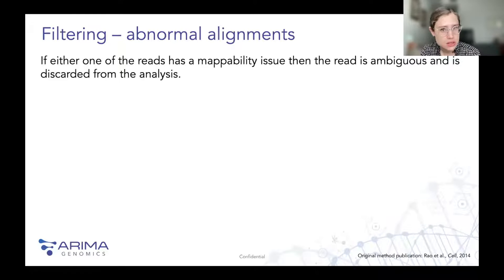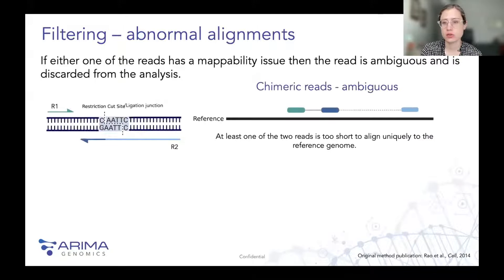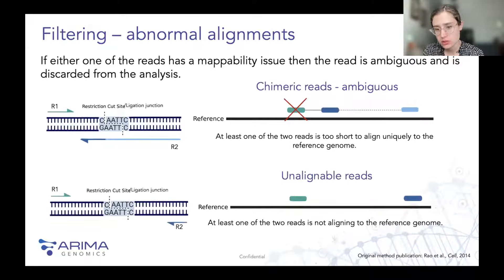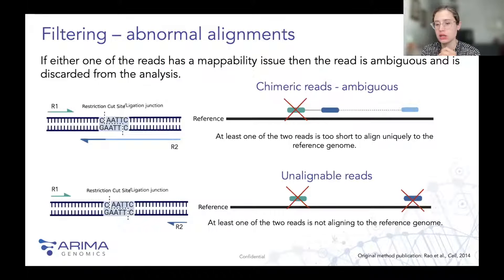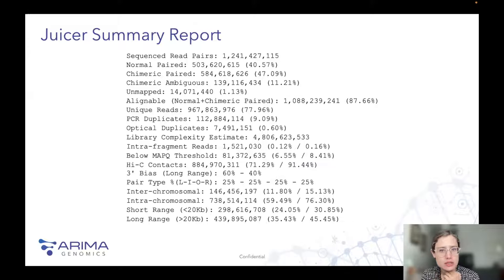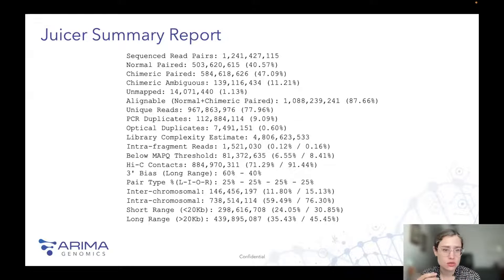Abnormal alignments: if you have a mappability issue, you need to remove that read. For example, with chimeric reads where one end is too short to align properly, that read pair must be discarded. Similarly, if either of the two ends doesn't align uniquely on the genome, we need to remove them whether the read is chimeric or not. After filtering, Juicer — as well as pipelines like HiCup — outputs a summary report to give you a better idea of your sample and experiment quality.